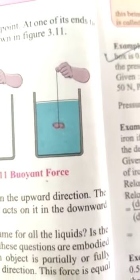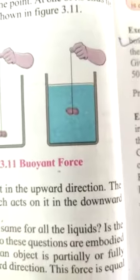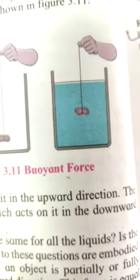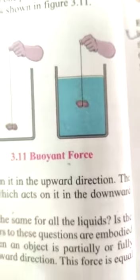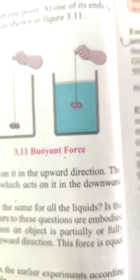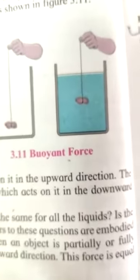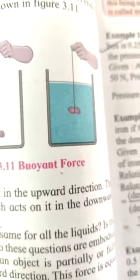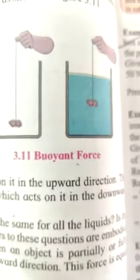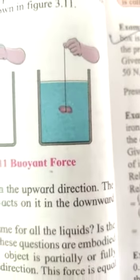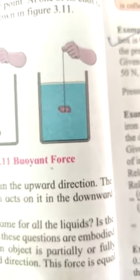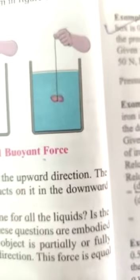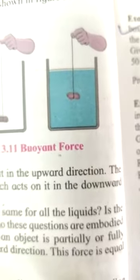So what is the Archimedes principle? When an object is partially or fully immersed, if we immerse or if we dip it in the liquid, partially or fully, a buoyant force acts on it in upward direction. And this buoyant force is equal to the weight of fluid, the weight of liquid or the air displaced by the object. So the statement states, when an object is partially or fully immersed in liquid, the force of buoyancy acts on it in upward direction. And this force is equal to the weight of fluid displaced by the object.